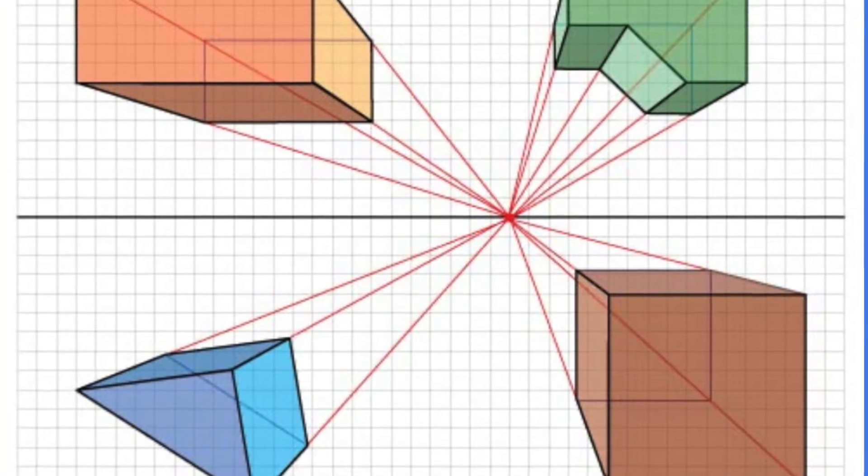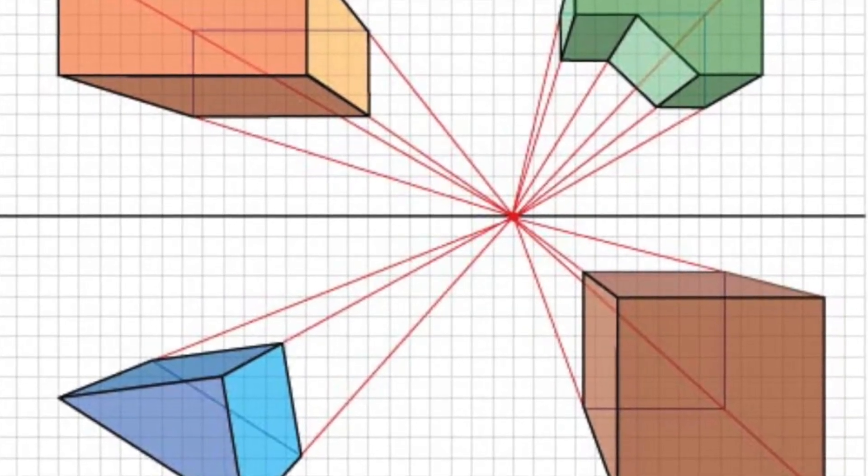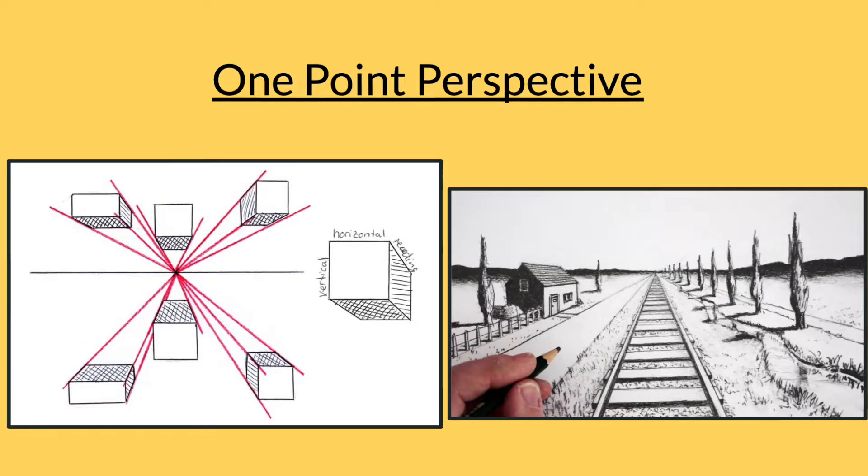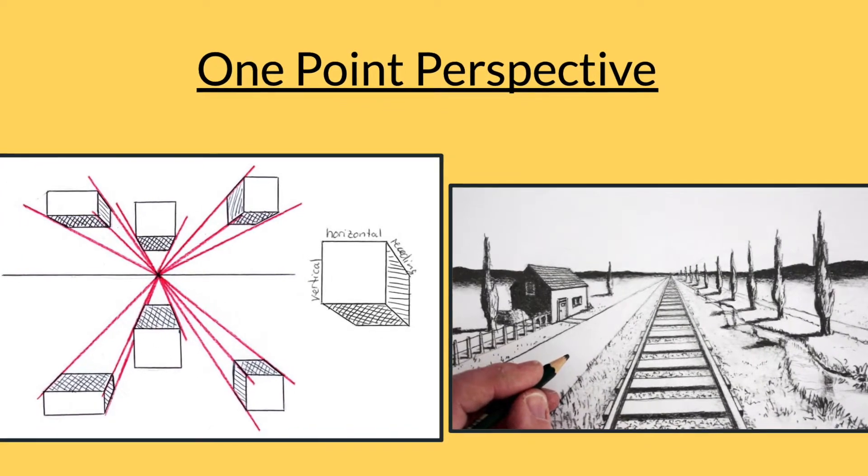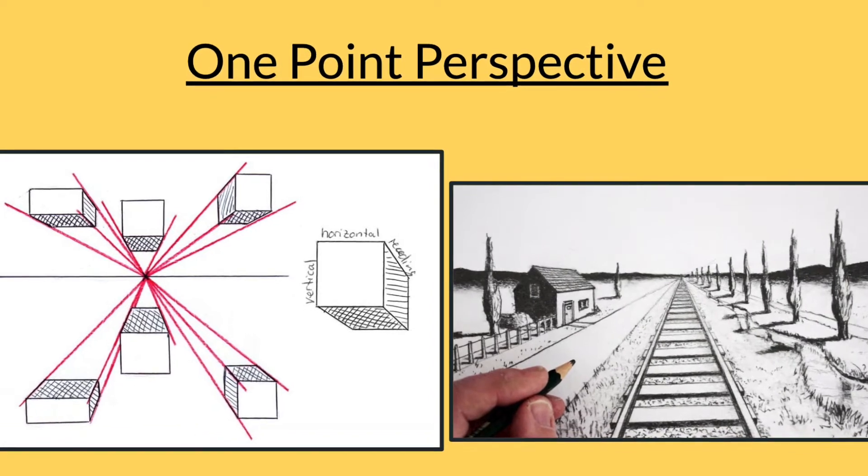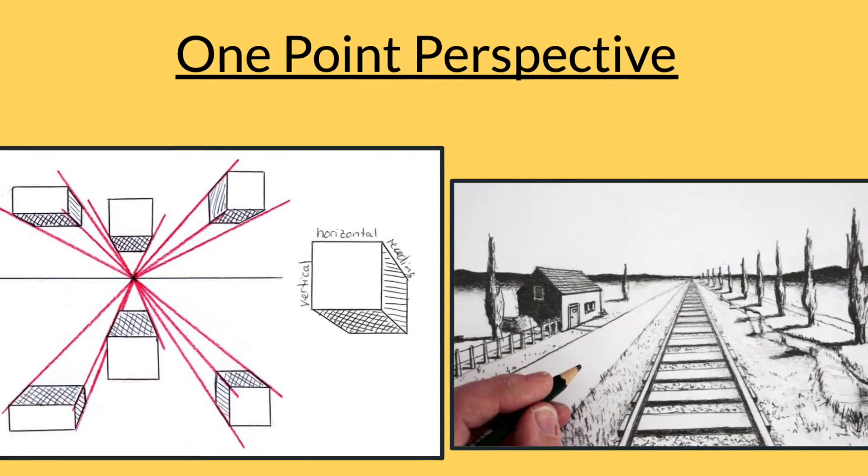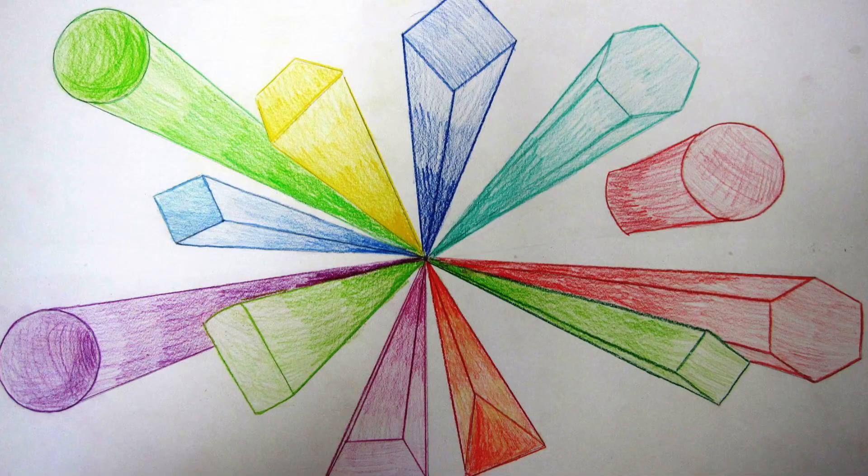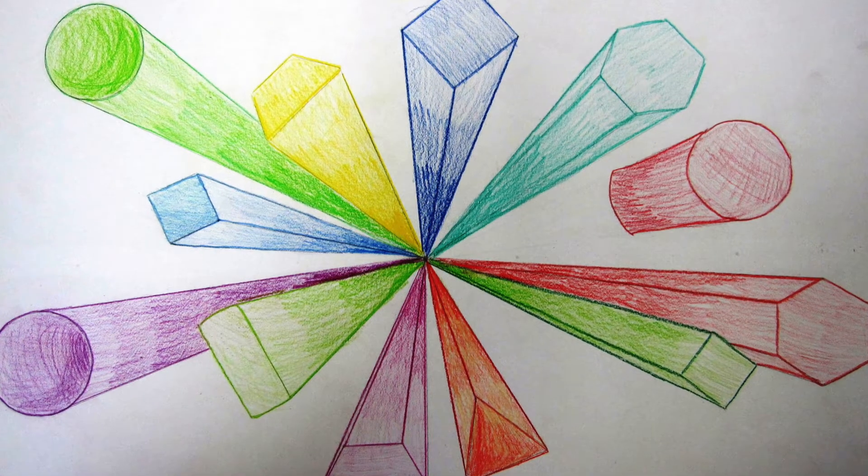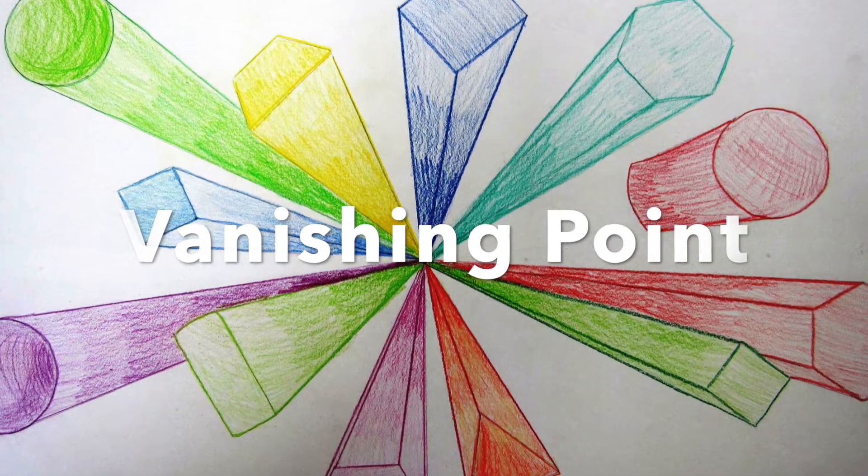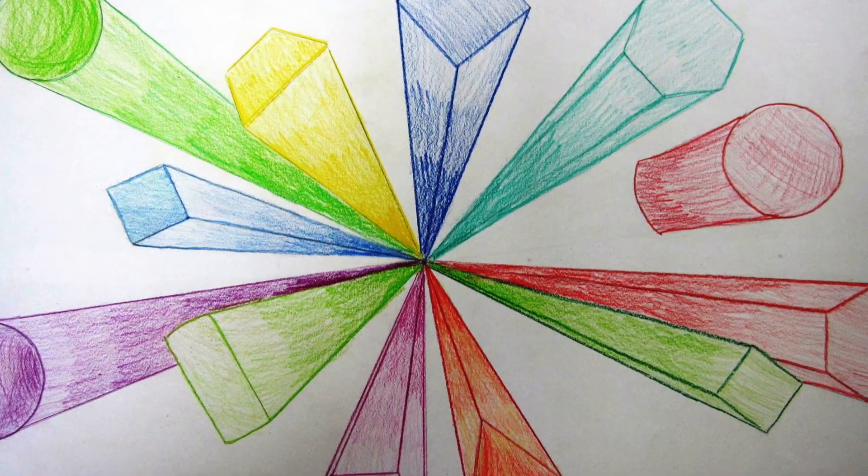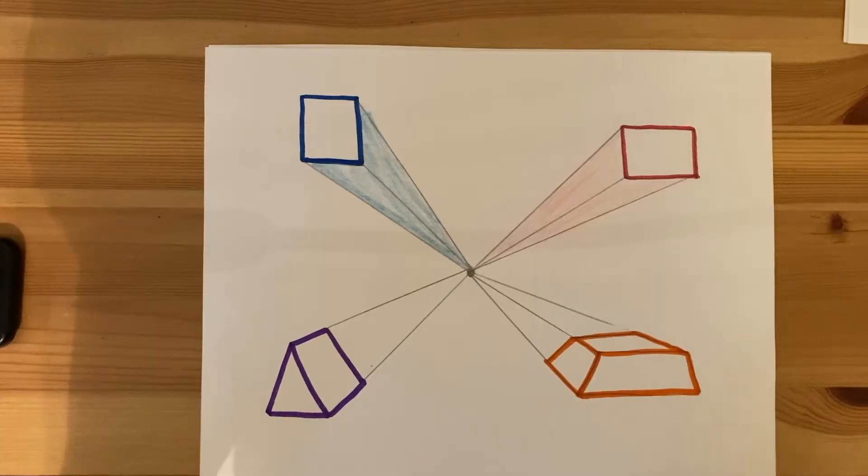We're going to be learning about how using one-point perspective can help us draw these shapes. We looked at one-point perspective last week to help us draw a landscape and today we're going to use it to draw our shapes. The use of one-point perspective uses a vanishing point where all of the lines in the picture go to and we will use this tool today to create our shapes.